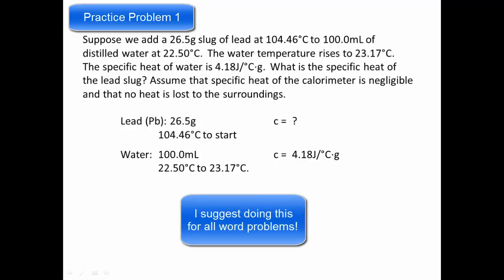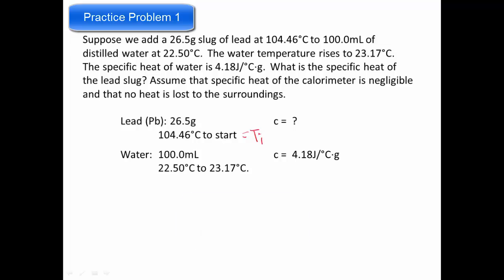So our lead is 26.5 grams, and our initial temperature, so that's our Ti, of the lead is 104.46°C. And our water, here's everything we know about it. So what we need to solve for is our specific heat of the lead slug.